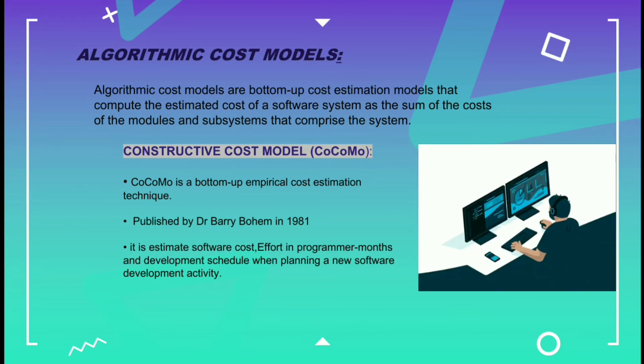Algorithmic cost models are bottom-up cost estimation models that compute the estimated cost of a software system as the sum of the costs of the modules and subsystems that comprise the system.